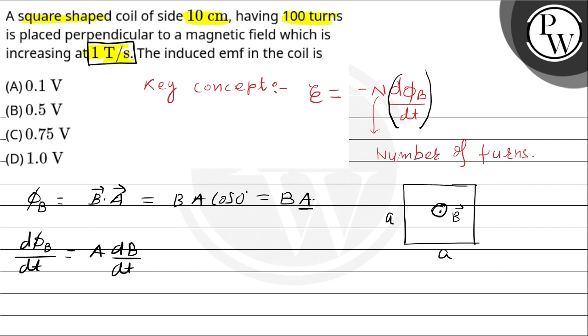Calculate this value. A is the magnitude of area. A equals a squared. What is the value of a? 10 centimeter, which is equal to 0.1 into 0.1. This is equal to 0.01 meter squared.